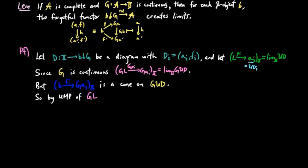So by the universal mapping property of the limit GL, there exists a unique factorization H in the category B, such that for each I,